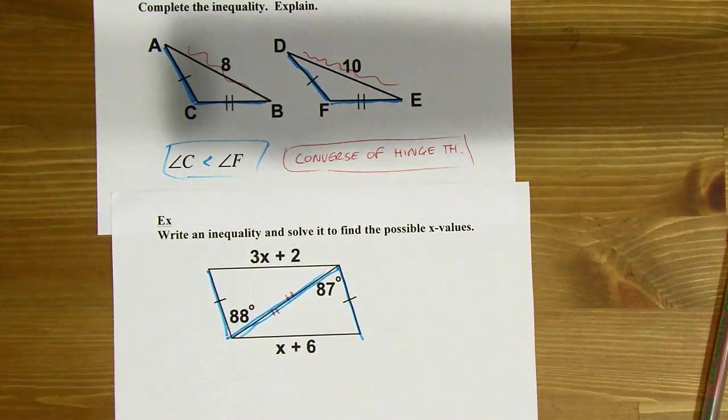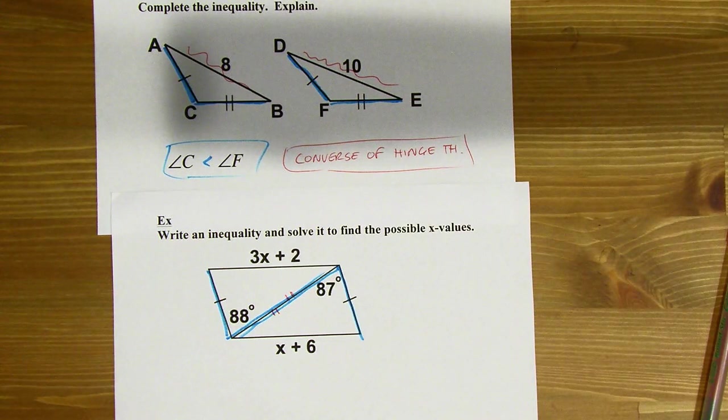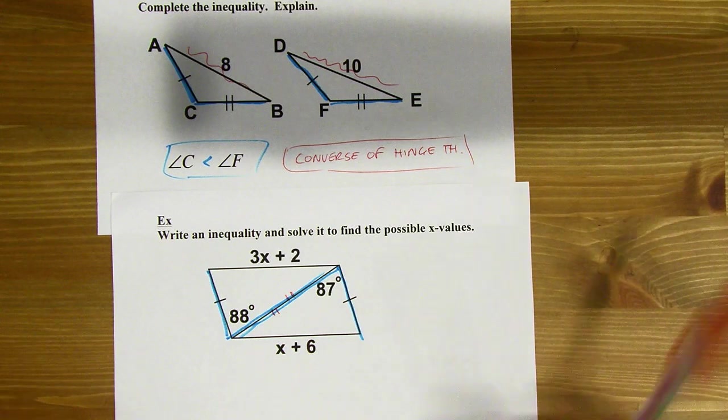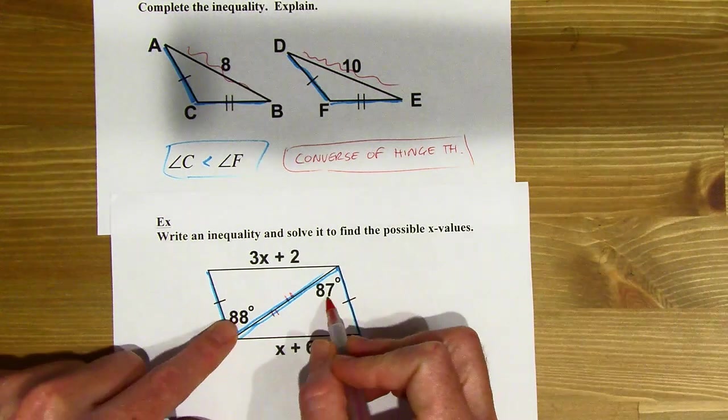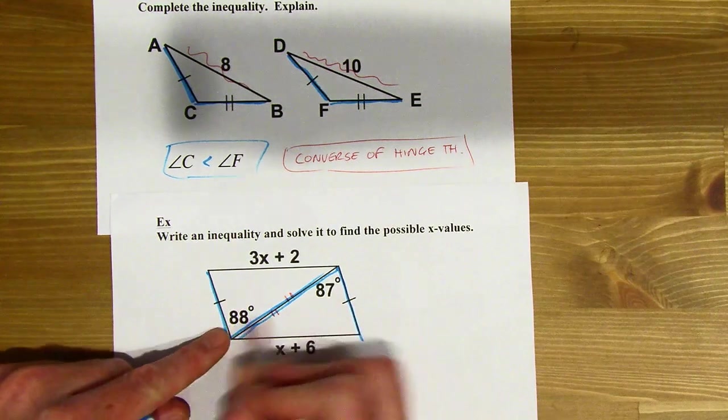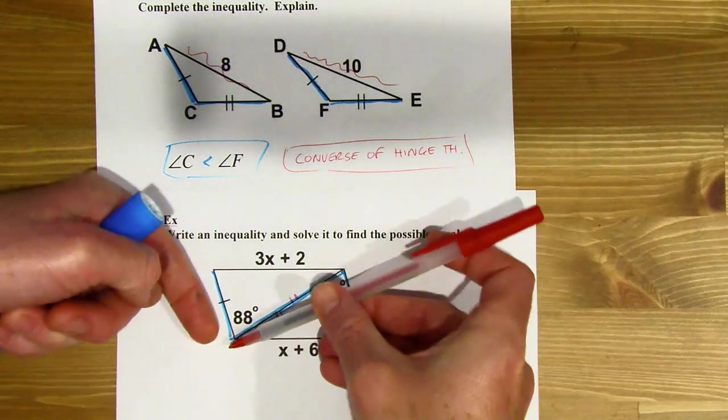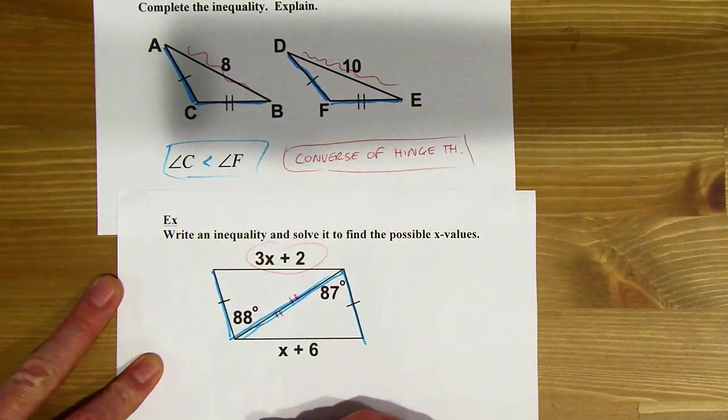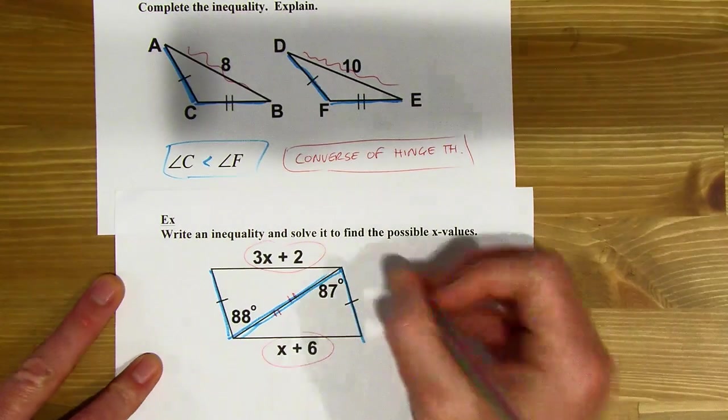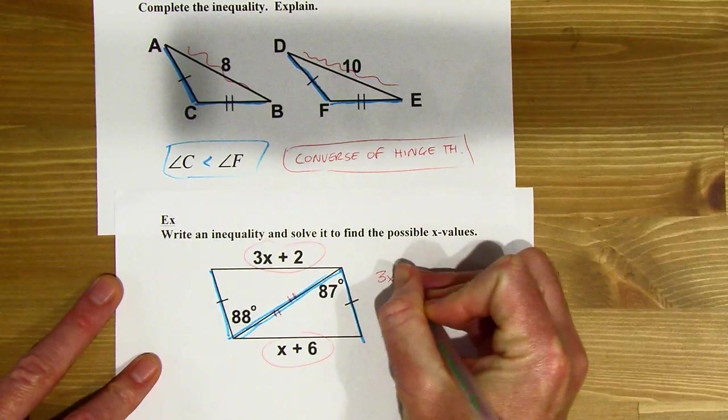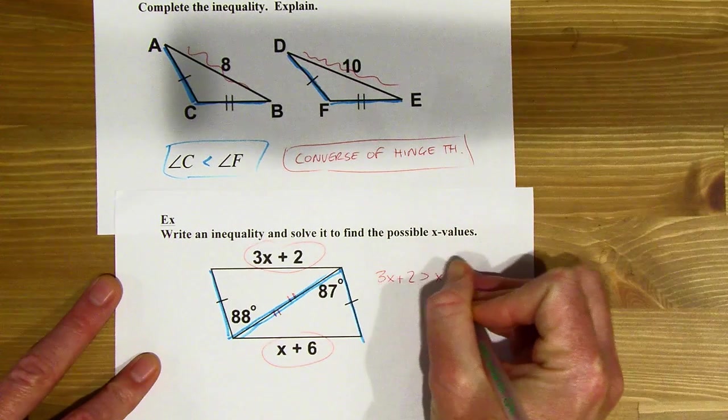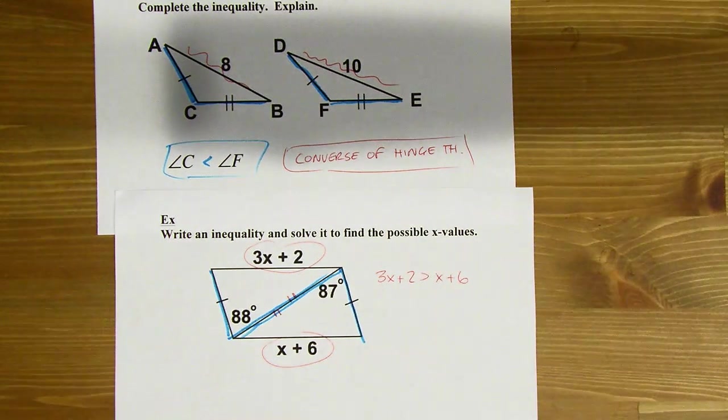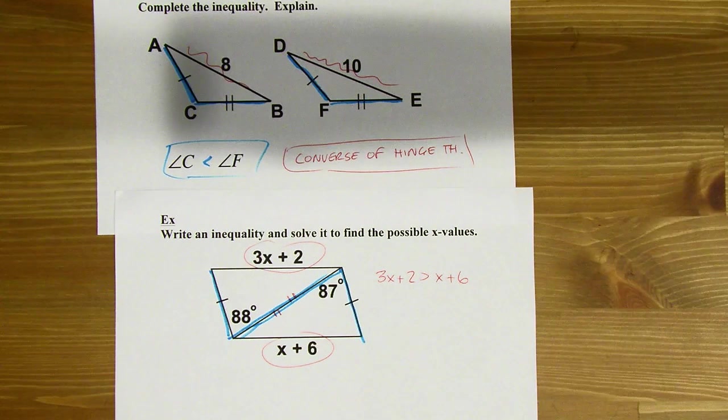Now I've got myself a hinge here and a hinge here. And now what I want to do is figure out which of those hinges is open wider. And I'm just looking for the two angle measures because I've got them. So hey, 88 is greater than 87. That means this hinge is open wider. So then I know 3X plus 2 should be greater than X plus 6.